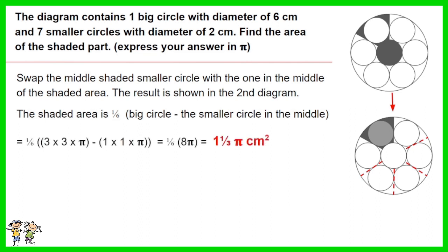The area of the big circle is 3 times 3 times π. The area of the smaller circle is 1 times 1 times π. Work out the equation.